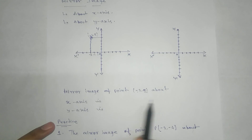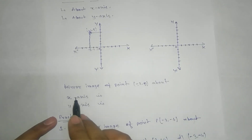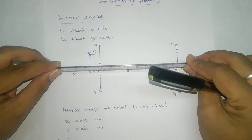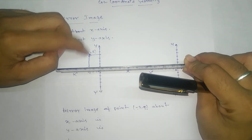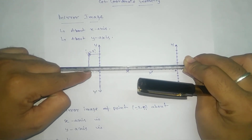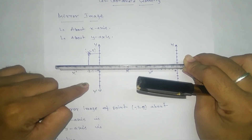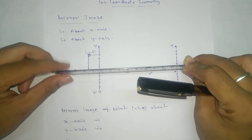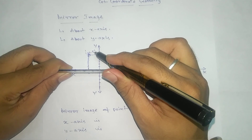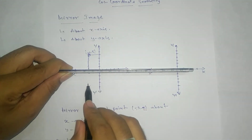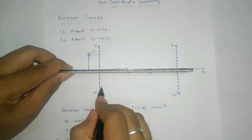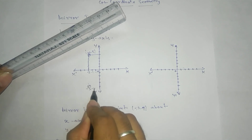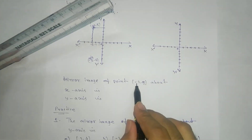To find the mirror image of (-3, 5) about the x-axis, imagine placing the mirror along the x-axis. The rule for a plane mirror is that object distance equals image distance. So the x-coordinate remains the same, minus three, but the y-coordinate becomes minus five. Going one, two, three, four, five units below the x-axis, the mirror image about the x-axis is (-3, -5).